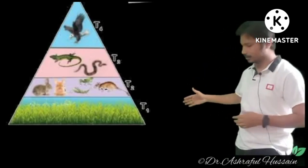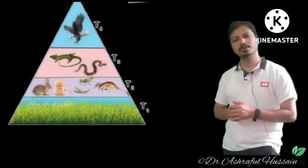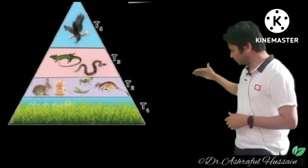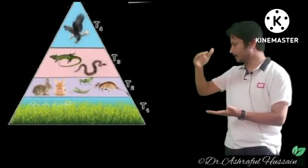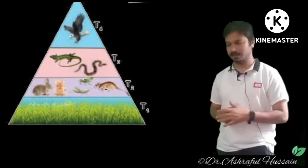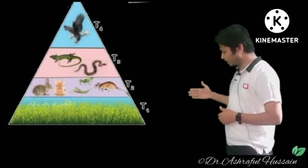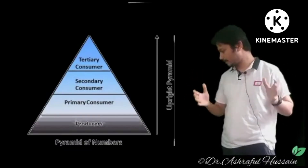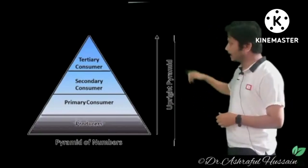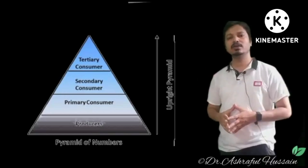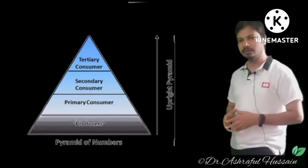Here you can see the producers occupy the base level with the broadest structure. Above them are the primary consumers, then secondary consumers, then tertiary consumers, and finally the top carnivores at the highest level. The broader structure is always occupied by the producers at the bottom, and the top level is always occupied by tertiary consumers or top carnivores. This is the pyramid of numbers in the case of a grassland ecosystem.